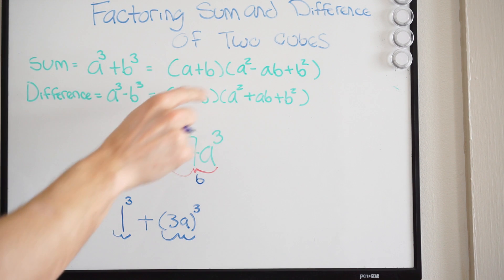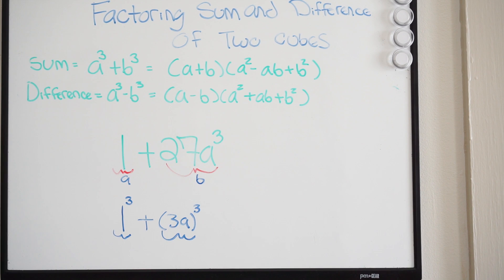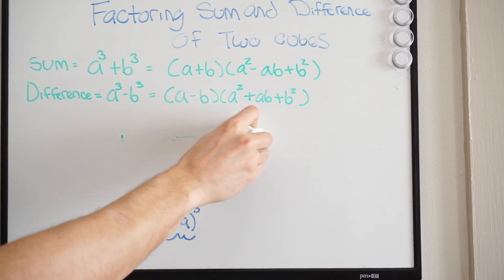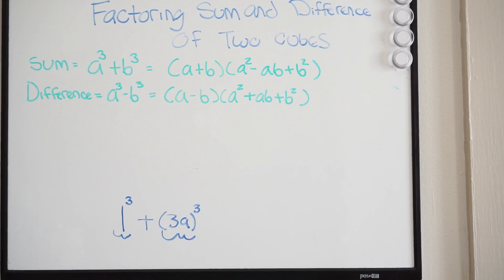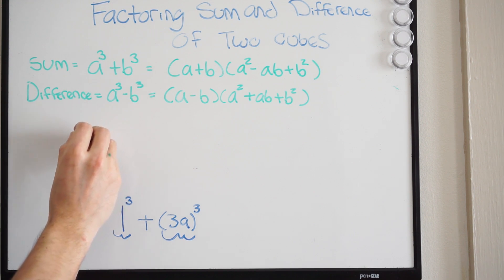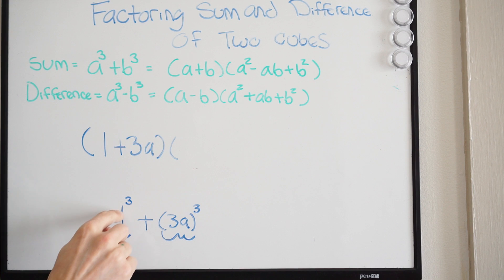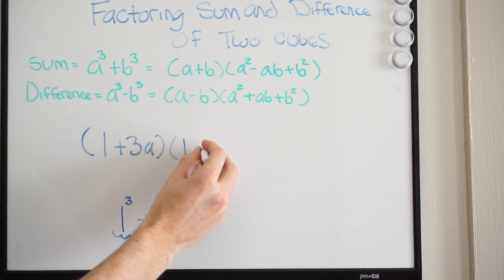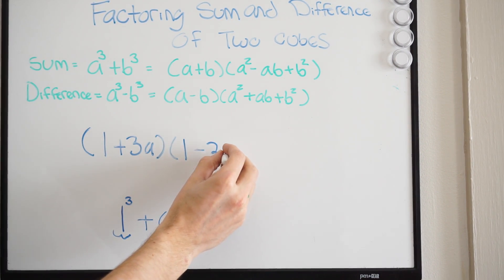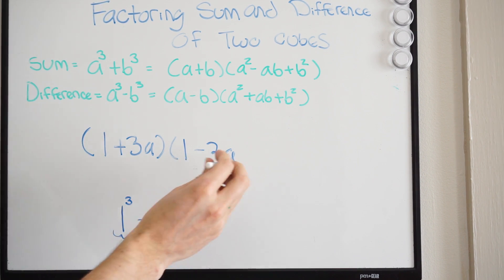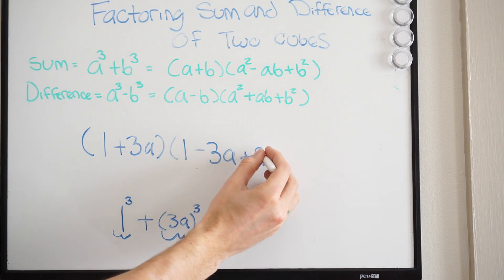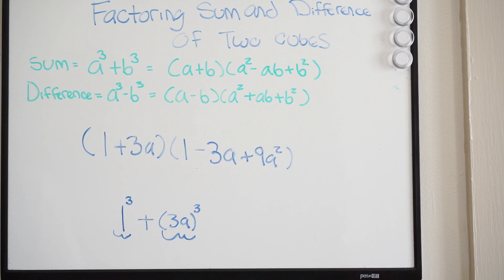What I can do is go ahead and follow the formula and expand this out. So this is acting like my a — we have 1 — and my b, which is plus 3a. Then a squared is going to be 1, minus ab, so 1 times 3a gives minus 3a. And then we just have b squared, so that's going to be plus 9a squared. And you're done — we've just factored this using the sum of two cubes. That is your final answer.